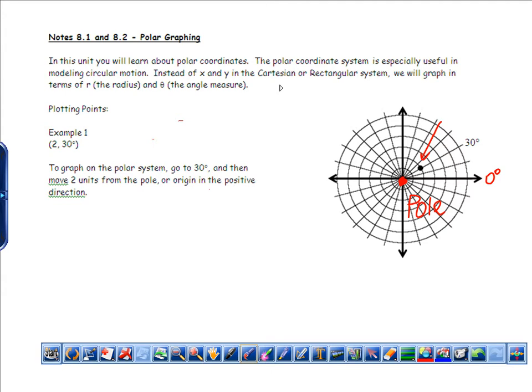So instead of the xy in the Cartesian or rectangular system, we will graph in terms of r, the radius, and theta, the angle measure. So it will look very similar to points that we used to plot, but you'll notice the main difference is that the second number will be an angle. It could be in radians, and it could be in degrees. We'll go back and forth between that.